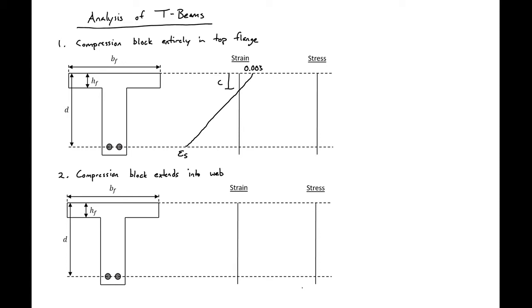Then the depth of our neutral axis is c and then we'll have our compression block which has a depth of a or beta 1c. In this case our compression block which I'm going to shade in red lies completely in our top flange.